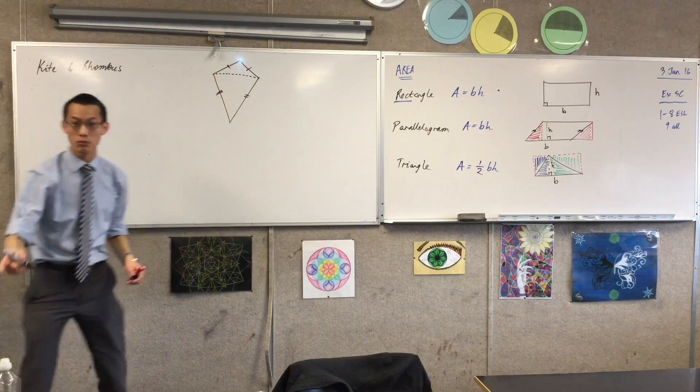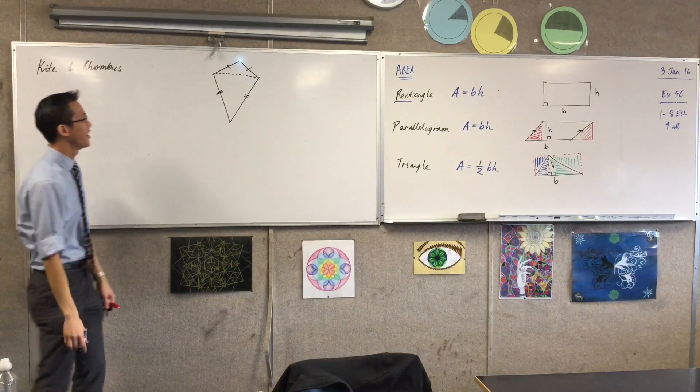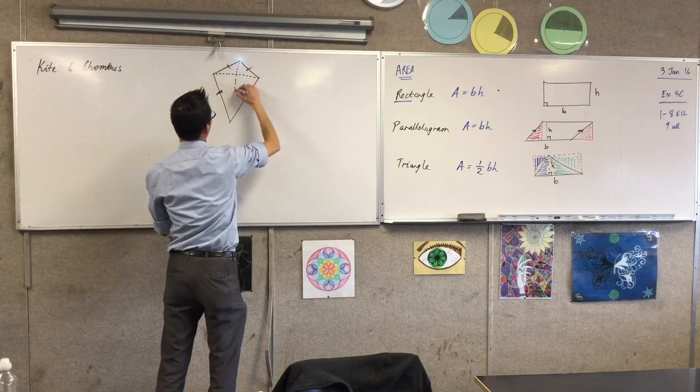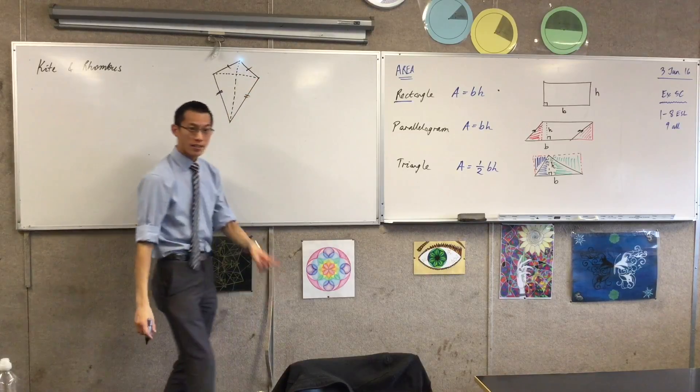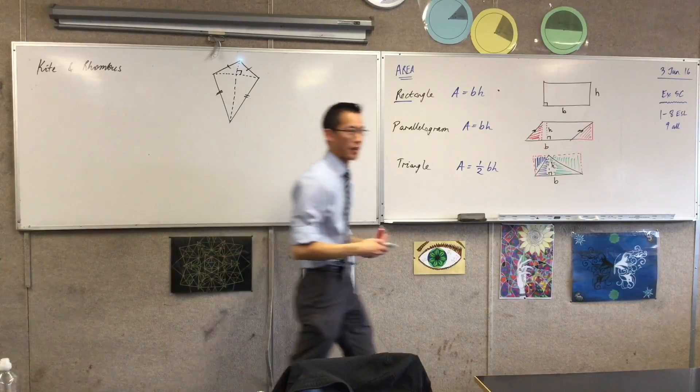if you draw both diagonals, you will find, importantly, that the diagonals are perpendicular to each other. Now, that fact doesn't seem, I mean, it seems kind of nice and a bit random, but why is it important to us?